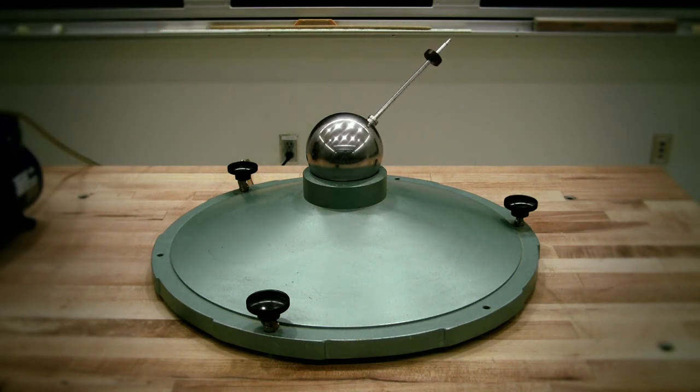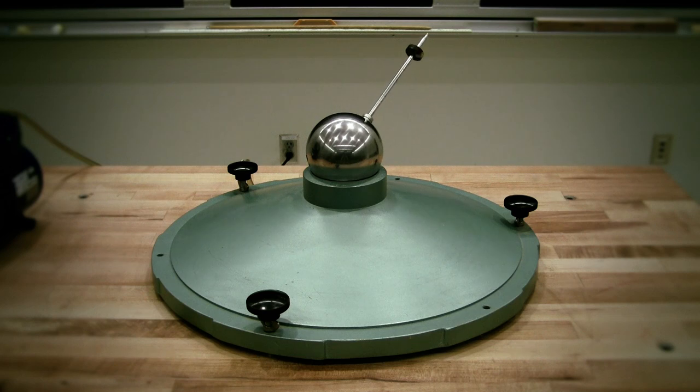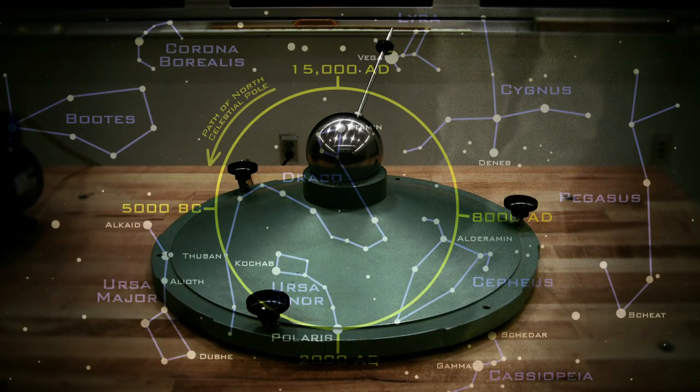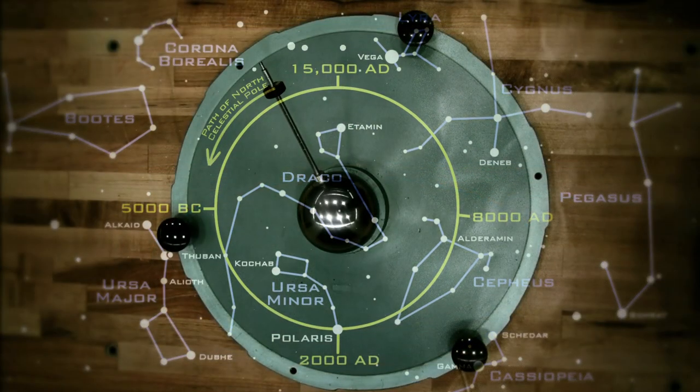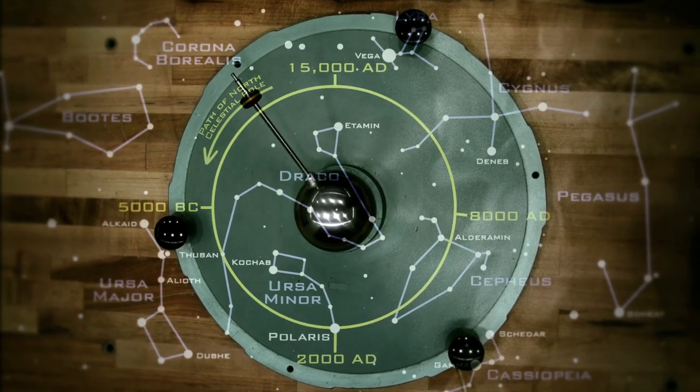Now remember that Earth's axis of rotation forms the basis for the celestial equatorial coordinate system. Thus, as the location of the vernal equinox and celestial poles change due to precession, the positions of stars in right ascension and declination also change.